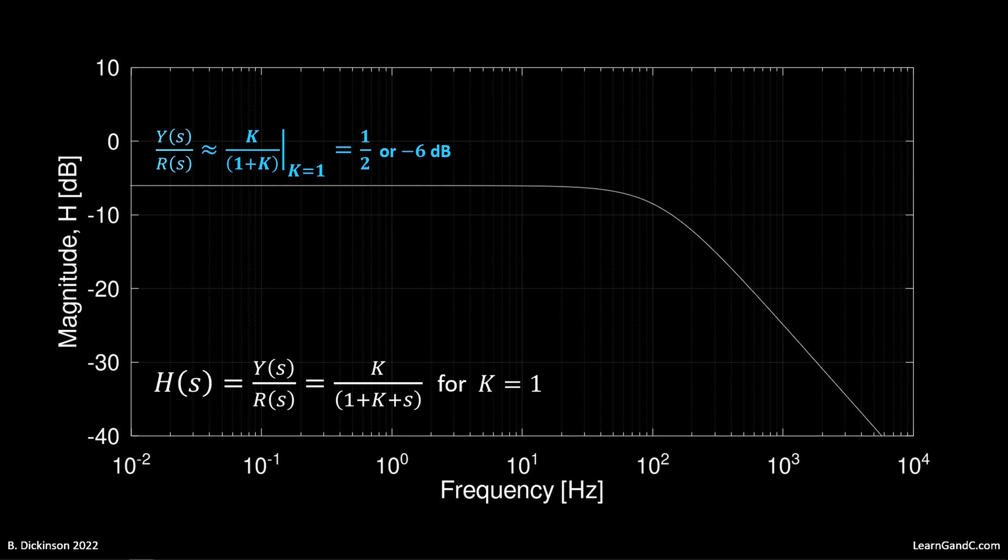So, if K equals 1, the low-frequency response is 1 half, such that the output response is half the amplitude of the command input. As frequency increases, the response output is attenuated because the closed-loop transfer function is strictly proper.